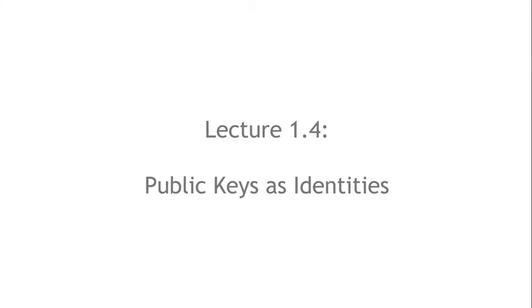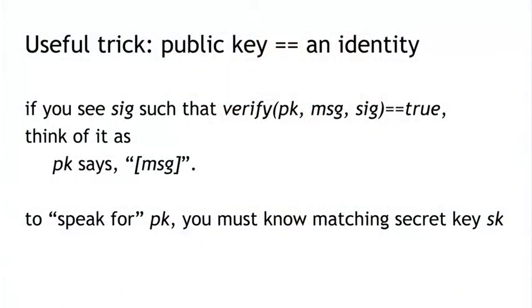In segment 1.4, we'll move on having covered digital signatures and talk about a nice trick that we can use. The idea is to take a public key — one of those public verification keys from a digital signature scheme — and equate that to an identity of a person or actor in a system. If you see a signature that verifies correctly with someone's public key on a particular message, you can think of that public key as saying the message. A public key is like an actor or party in a system that can make statements by signing them, and in that mindset, this public key is like an identity.